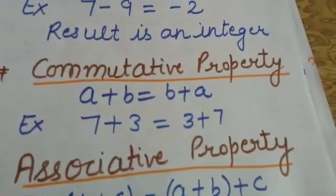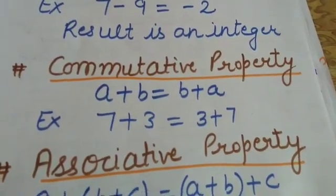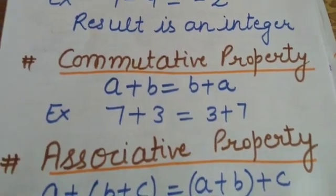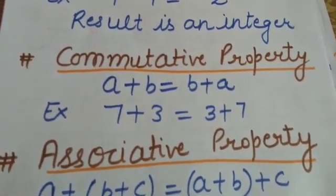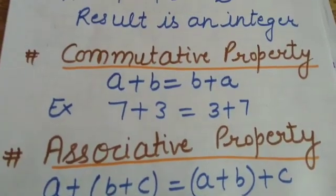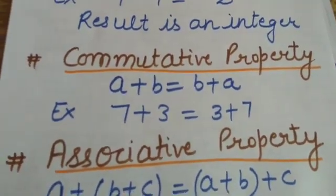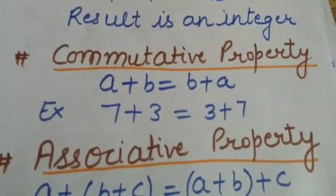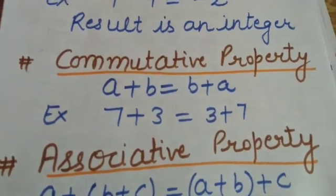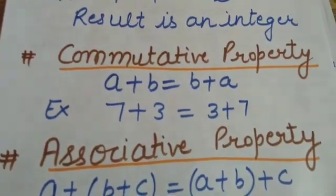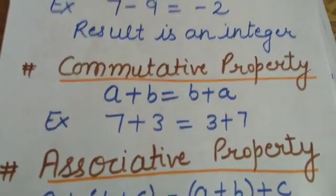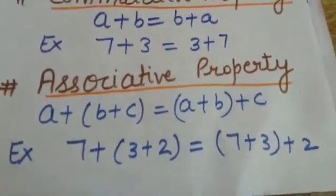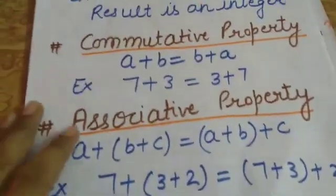The third property is commutative property. What it says: if you are adding two integers in any order you will get the same result, that is a + b = b + a. If you are adding a to b or b to a, you will get the same result. For example, 7 + 3 equals 3 + 7 — this remains the same irrespective of order. This is commutative property.